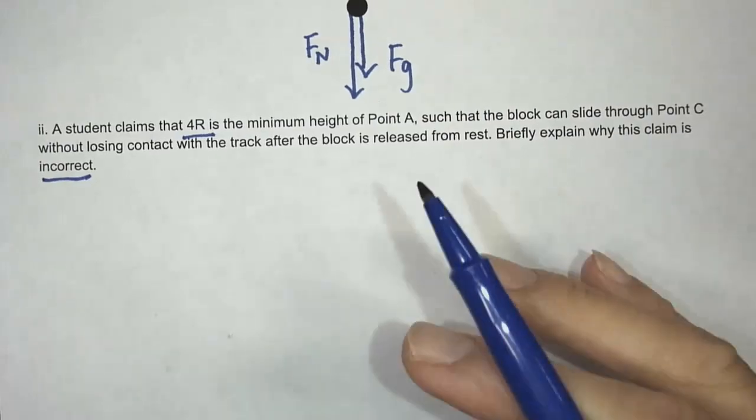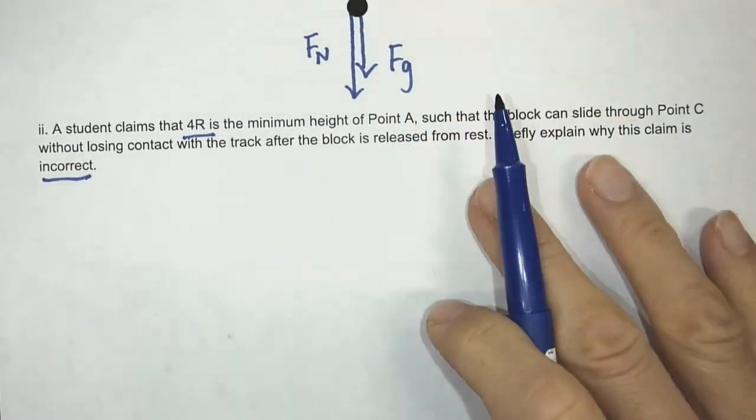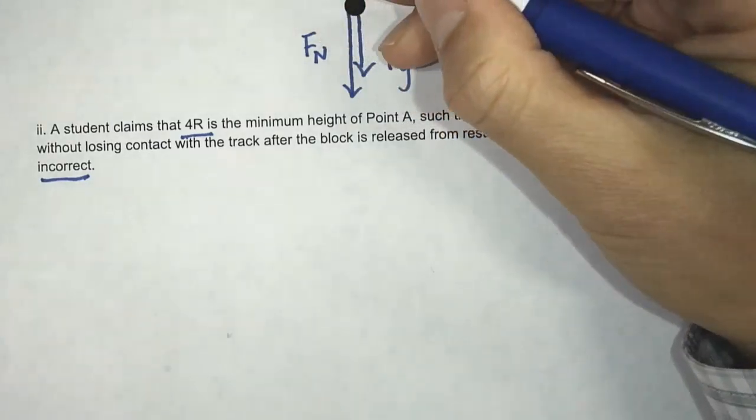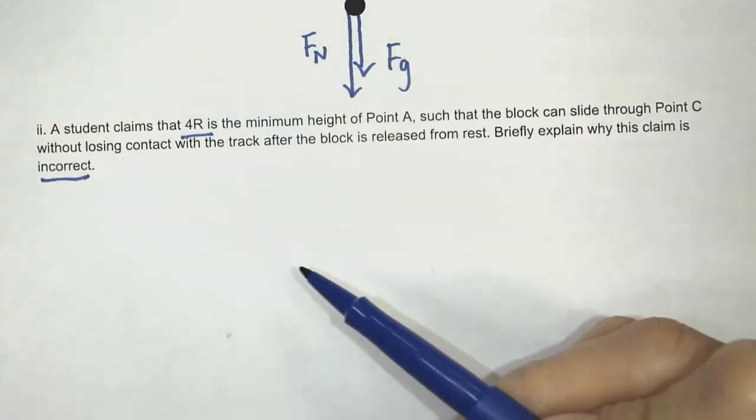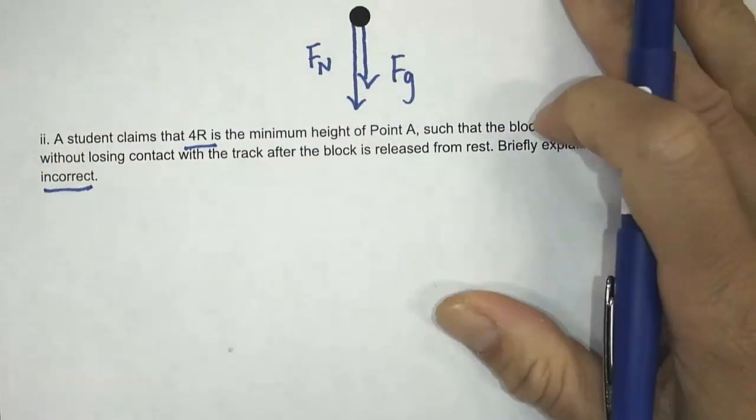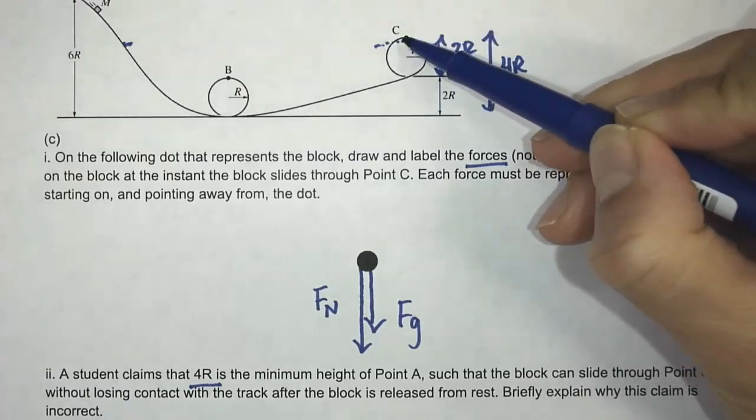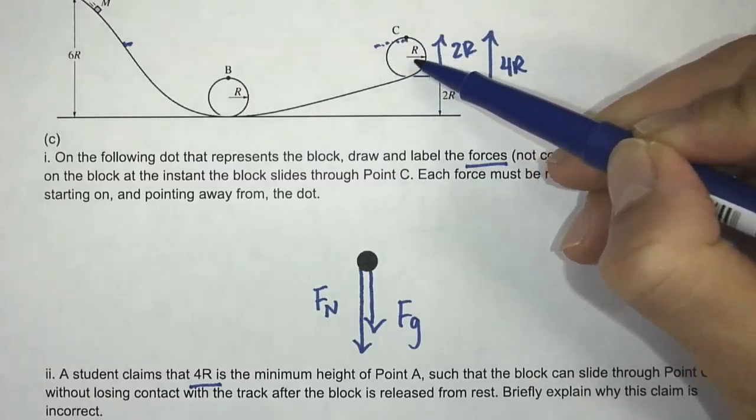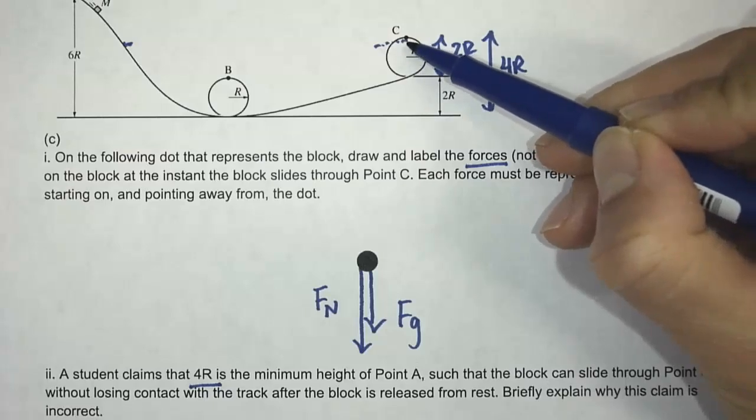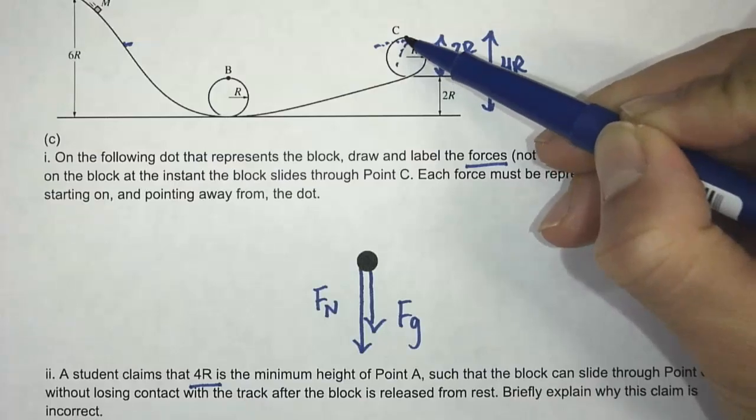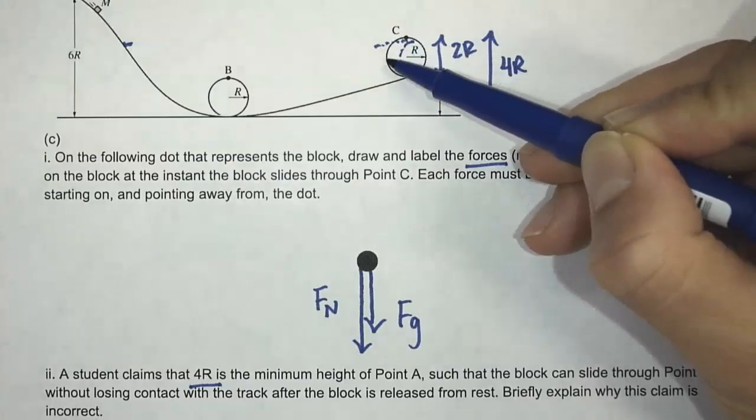Here's the thing. If we start with 4R, the highest it can get to when it goes back up is 4R. Now, the problem with this loop is in order to stay in contact with this loop to get all the way around, it's got to have some speed. If it doesn't have any speed, it's just going to fall off, right. So it needs to have enough speed to be able to get all the way around this loop.